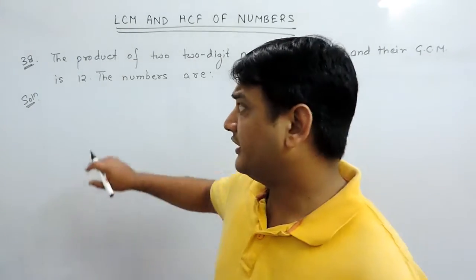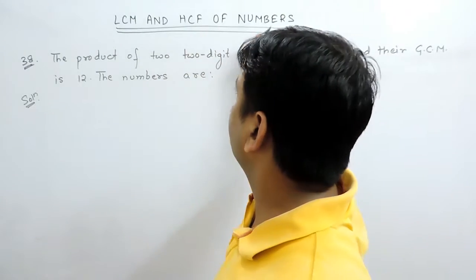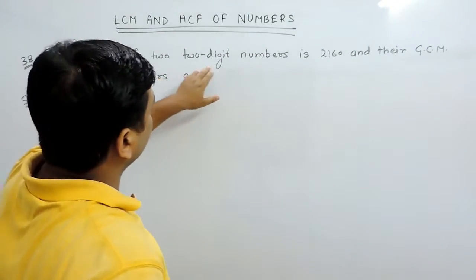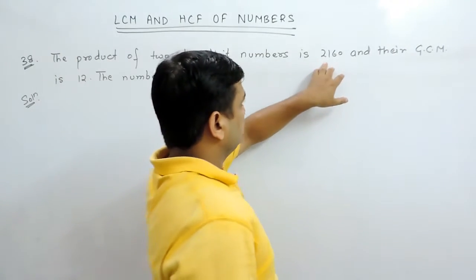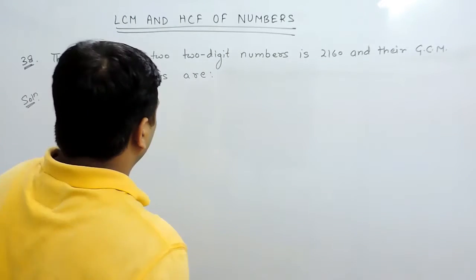Hello, I am Arun Malik and today I am going to solve question number 38 of LCM and HCF of numbers. The question is: the product of two two-digit numbers is 2160 and their GCM is 12. The numbers are...